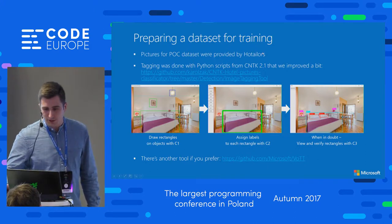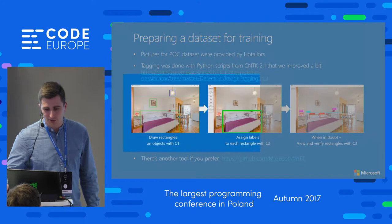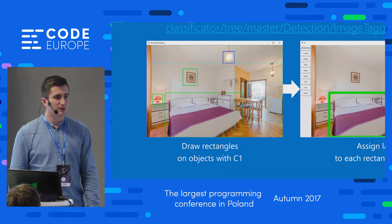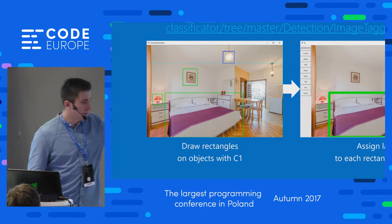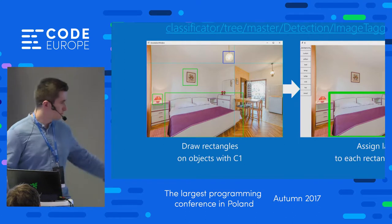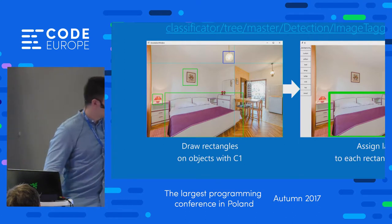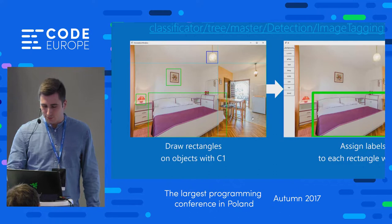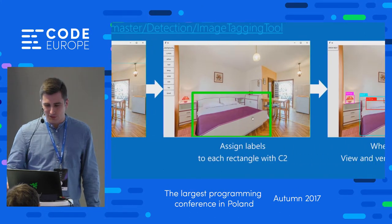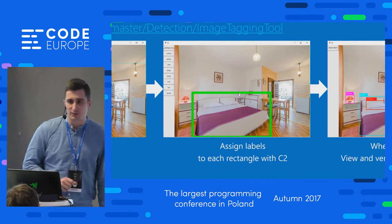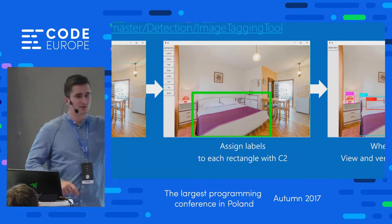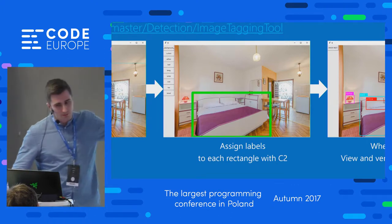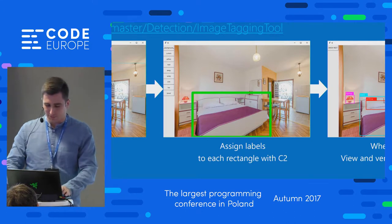There were two main scripts: C1 and C2. C1 was used to draw rectangles over the objects we were interested in — bed, lamp, curtains, and anything else. Then we used script C2 to assign labels, so for each rectangle we previously drawn we had to assign a label: bed, toilet, curtain, pillow, and everything else.